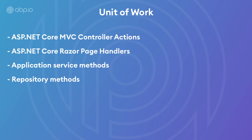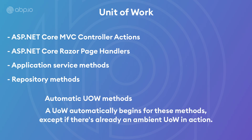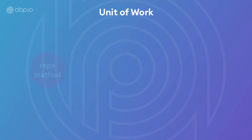All the following method types are considered as a unit of work automatically by the ABP framework: ASP.NET Core MVC controller actions, ASP.NET Core Razor page handlers, application service methods, and repository methods. A unit of work automatically begins for these methods, except if there is already an ambient unit of work in action.